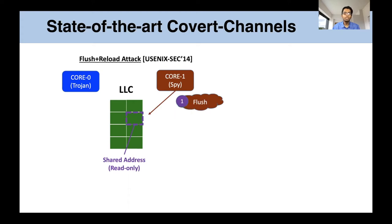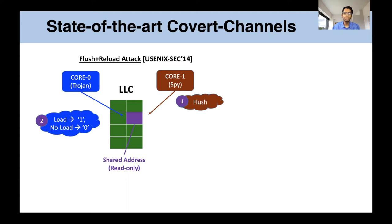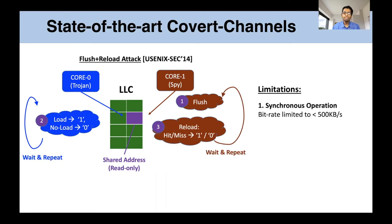In a flush-reload attack, the spy first flushes the address from the cache, then the Trojan installs the address to transmit a 1 and doesn't install the address into the cache to transmit a 0. The spy then reloads the address and by observing a hit or a miss, it can infer that the Trojan transmitted a 1 or a 0. All such attacks are synchronous in operation, in the sense that the spy and the Trojan wait for the other to complete its operations for the current bit before moving on to the next bit. This has limited the bit rate of existing attacks to close to 500 kilobytes per second over the last decade.